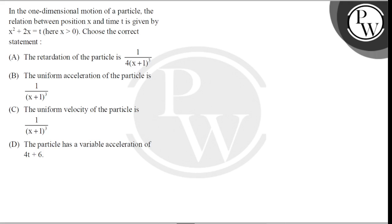The retardation of the particle is 1 upon 4 into x plus 1 whole cube. The uniform acceleration of the particle is 1 upon x plus 1 whole cube. The uniform velocity of the particle is 1 upon x plus 1 whole cube. And the particle has a variable acceleration of 4t plus c.